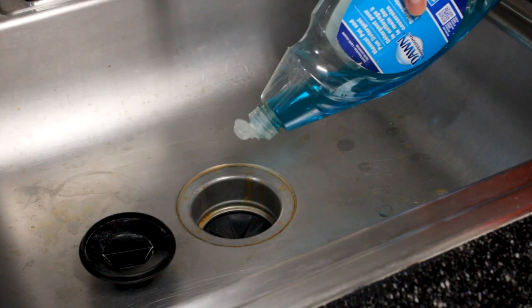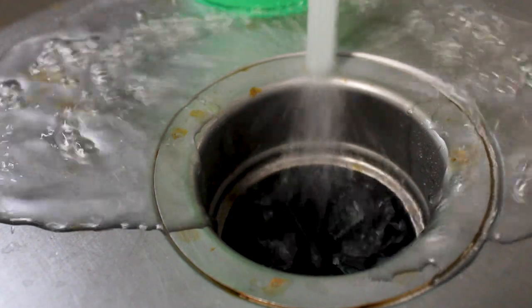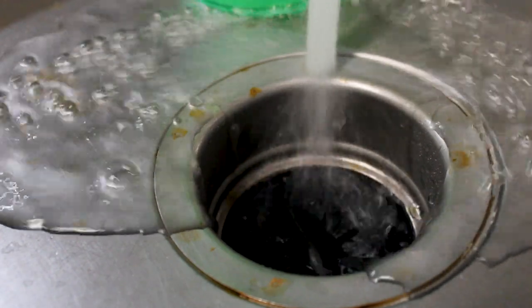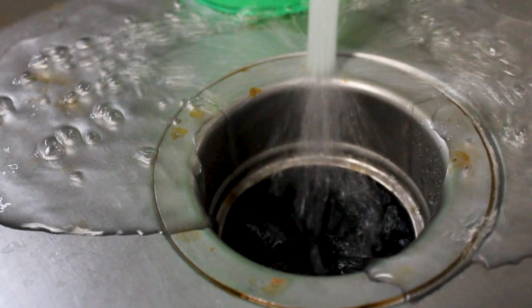After washing dishes, pour a little dish soap down the drain and run the garbage disposal for a minute or so with cold water running. The disposal should be cleaned every two weeks.